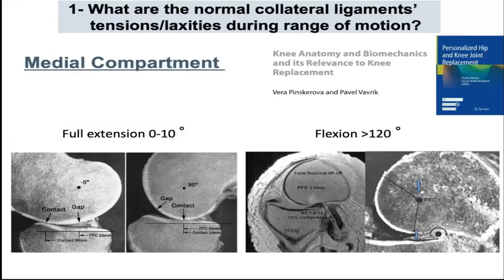With some flexion, the femoral condyle moves to a deep portion of the tibial plateau concavity, so the MCL loosens. With deeper flexion, there is a slight posterior translation of the condyle and a change in the radius of curvature, which further reduces the MCL tension.